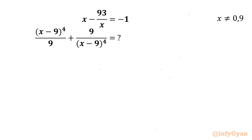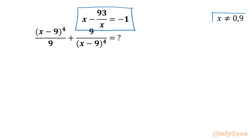Welcome back to Infigyan, my dear friends. Today in this video we are going to take up another challenging question from algebraic simplifications. Here we have to evaluate (x minus 9) to the power 4 over 9, plus 9 over (x minus 9) to the power 4. The given equation is x minus 9 times 3 over x equals negative 9. Conditions: x cannot be 0 and x cannot be 9.